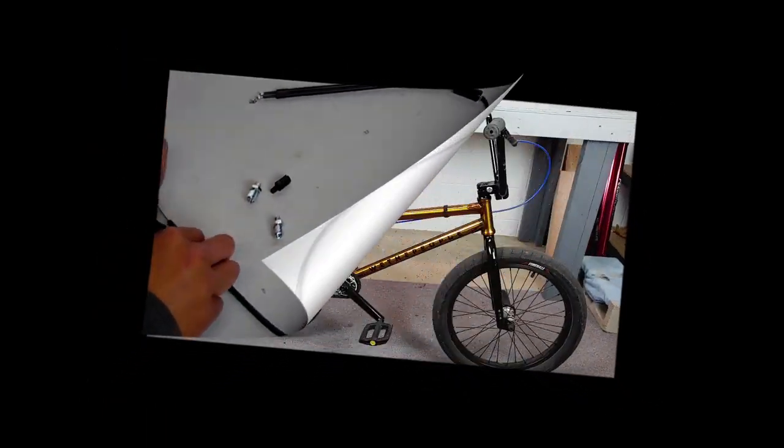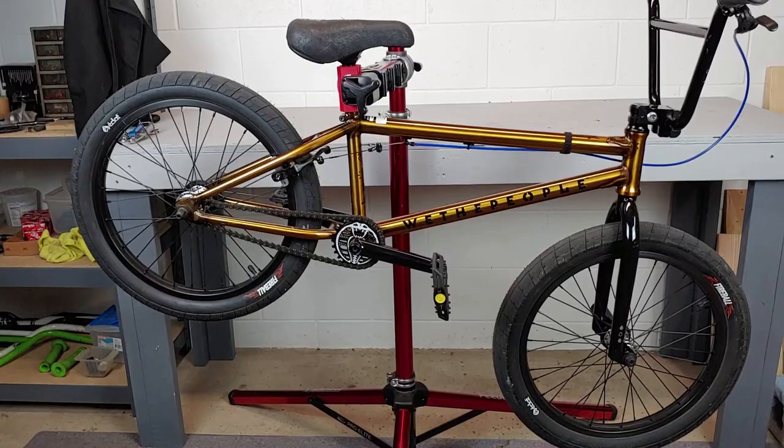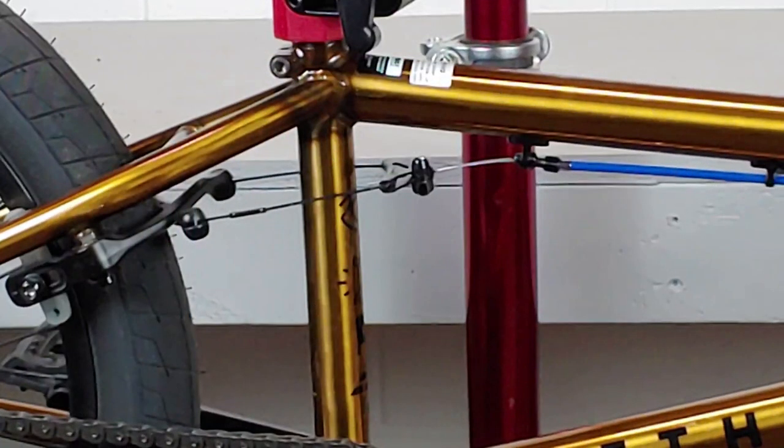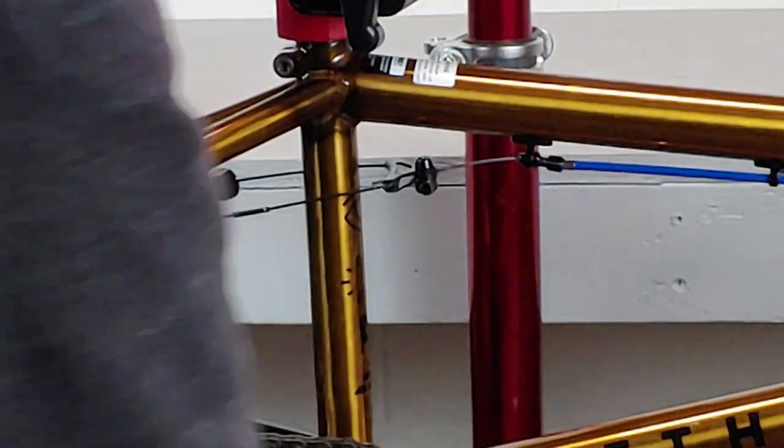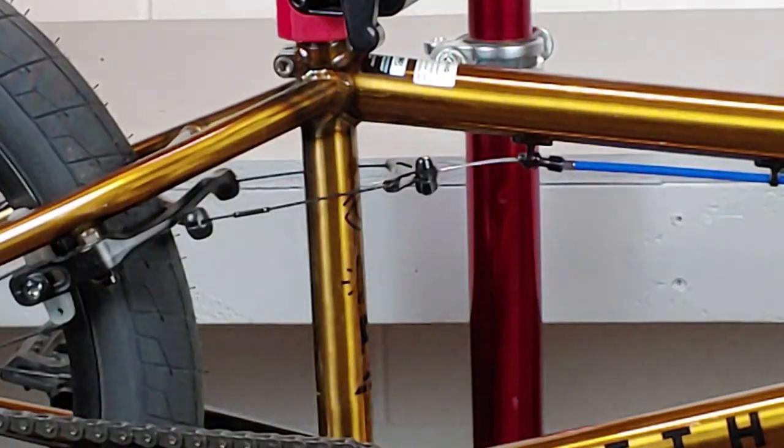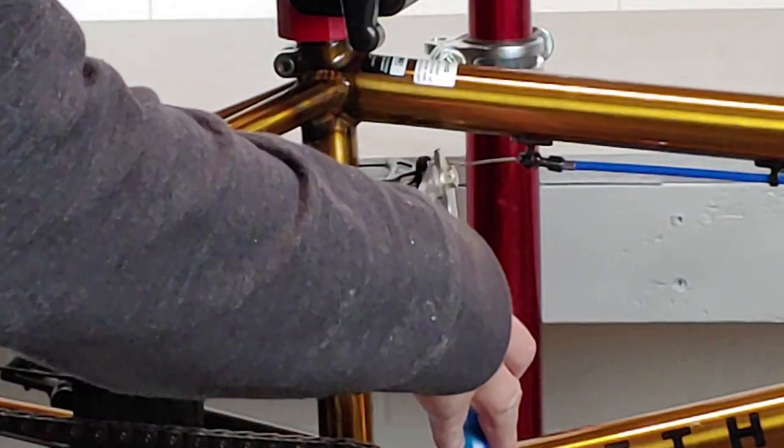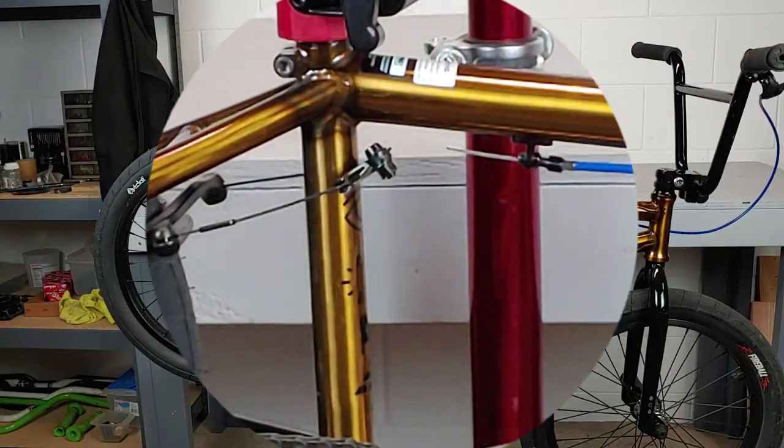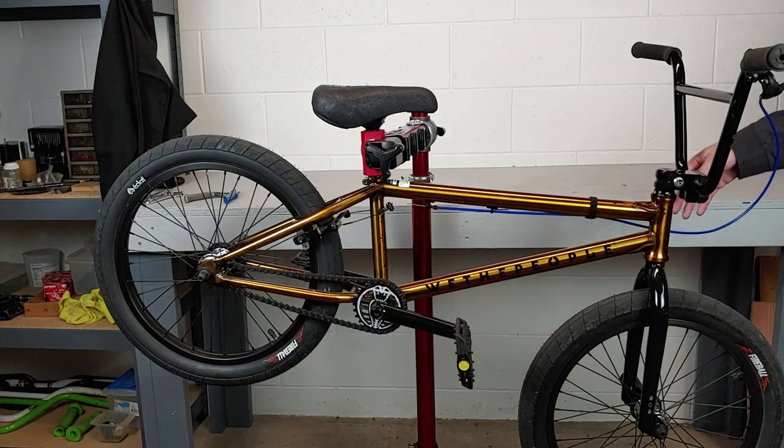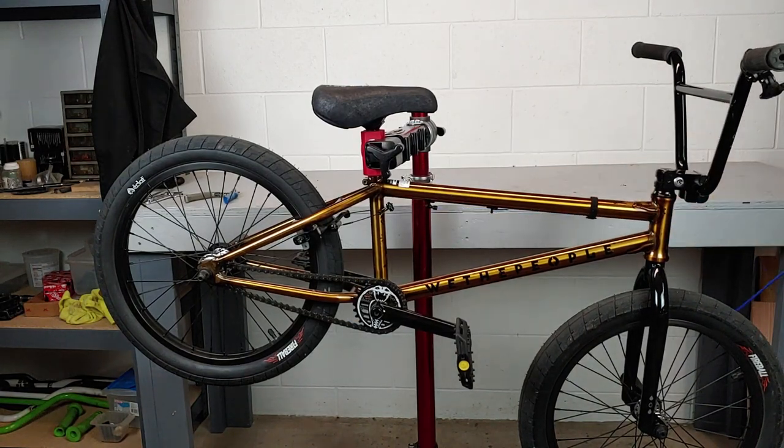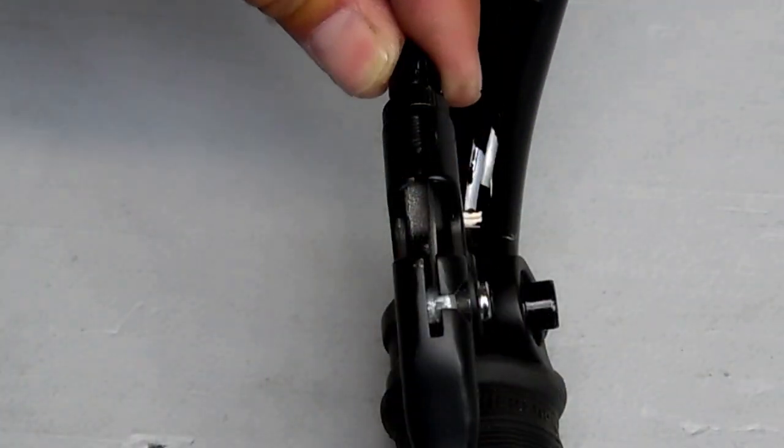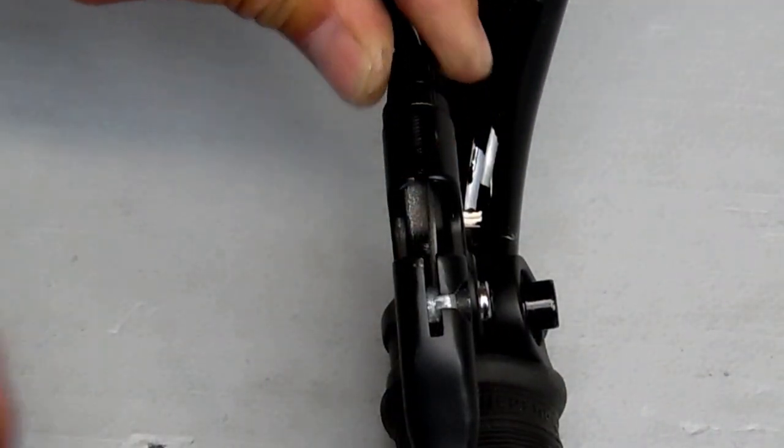So let's get started. We're going to throw our bike in our stand and cut the old cable off. If you haven't installed brakes on your bike yet, you can check out my U-brake installation video - there will be a link on the screen now or a link in the description.